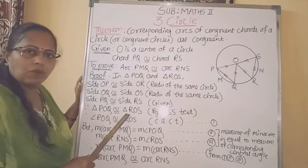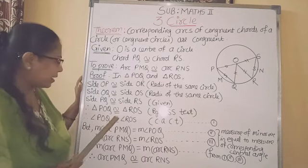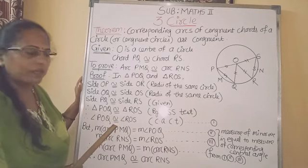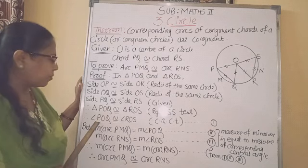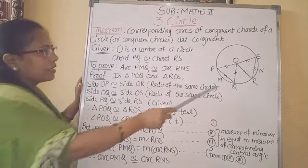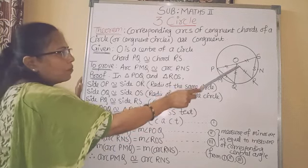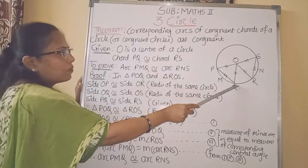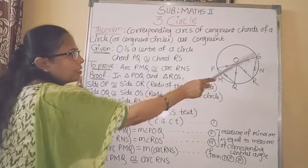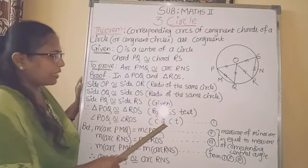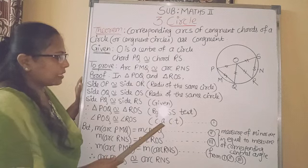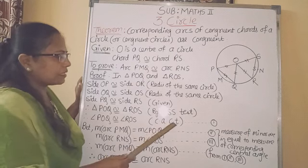If two triangles are congruent, their corresponding angles are also congruent. So, we get angle POQ congruent to angle ROS. Reason: corresponding angles of congruent triangles — CACT. This is statement number 1.